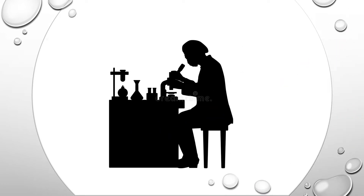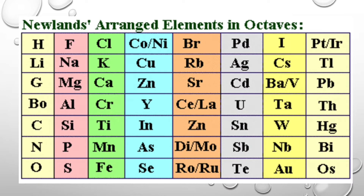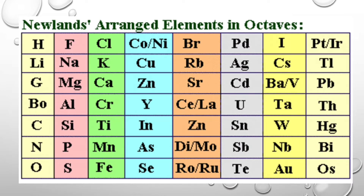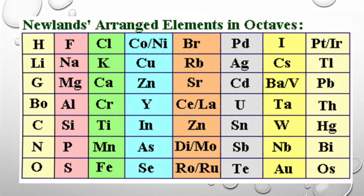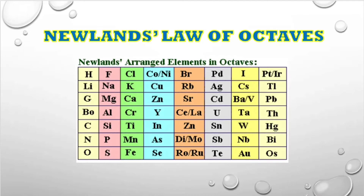After the failure of Döbereiner's Triads, the next attempt to classify elements was done by British chemist John Newlands. By this time, 56 elements were discovered. He arranged all these elements in an increasing order of their atomic masses and found that every eighth element had properties similar to that of the first. He compared this to the octaves found in music, and therefore this classification was known as Newlands' Law of Octaves.